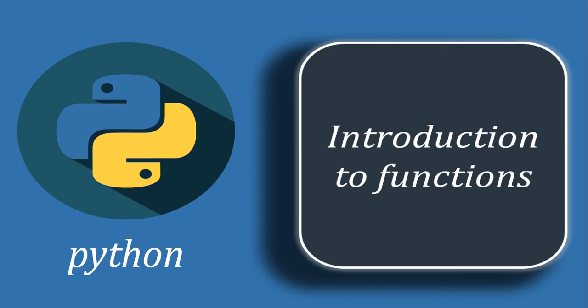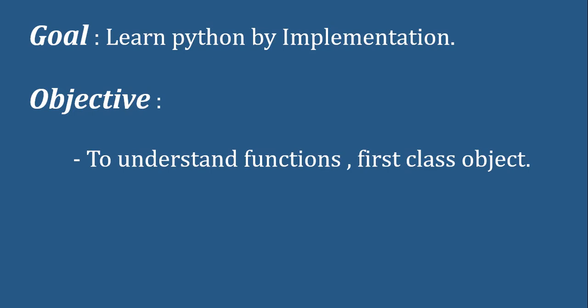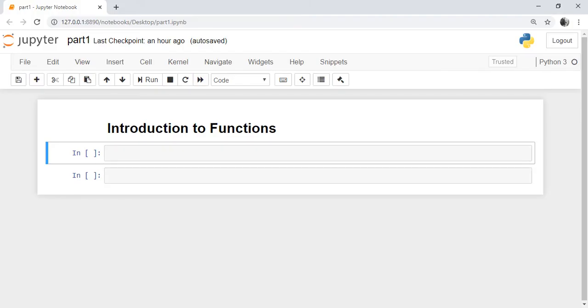Welcome to part 1 of lecture 7. We are starting with functions in this session. We are discussing an introduction to functions. The overall goal of our tutorial series is to learn Python by implementation. Today we are understanding functions, their syntax, and why they are called first class objects. Functions are a group of statements written to perform a particular task.